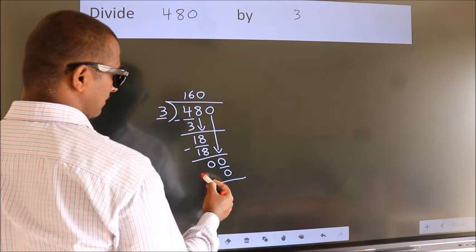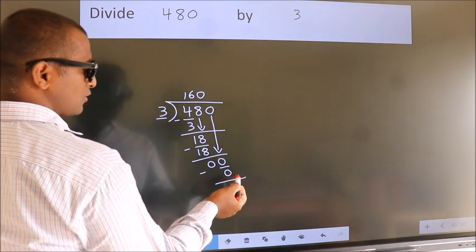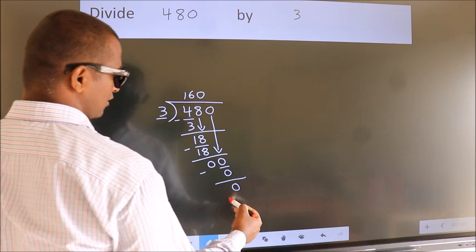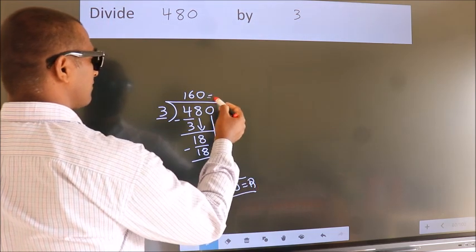Now we subtract and get 0. No more numbers to bring down, so we stop here. This is our remainder. This is our quotient.